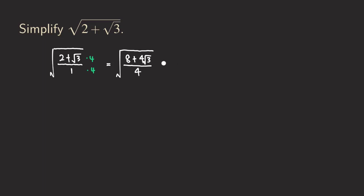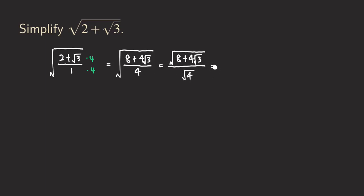Now we are going to split the radical so that we get the radical of eight plus four radical three. And in the denominator we get radical four, which turns into a two.